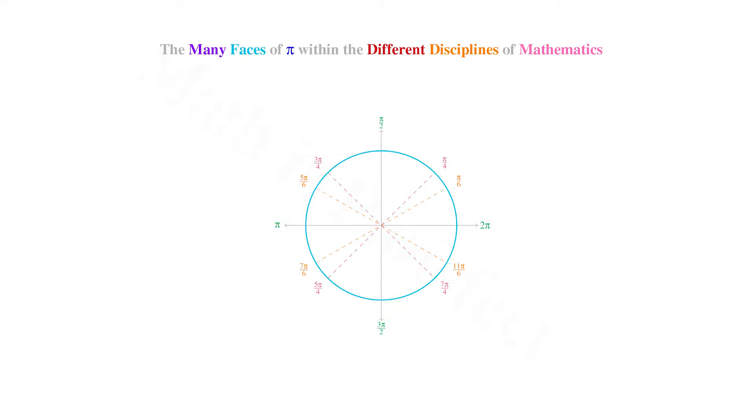Similarly, the 30 degree angles, as measured from the x-axis, divide the circle into 12, hence 2 pi over 12 gives us multiples of pi over 6. Finally, the 60 degree angles, as measured from the x-axis, divide the circle into 6, hence 2 pi over 6 yields multiples of pi over 3.